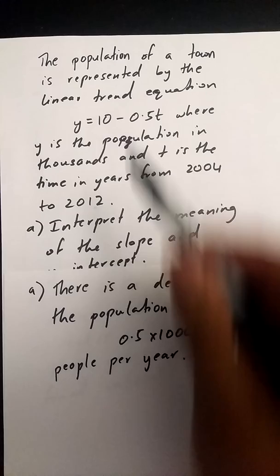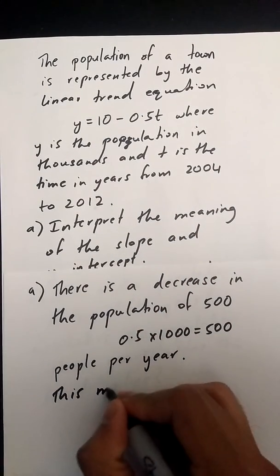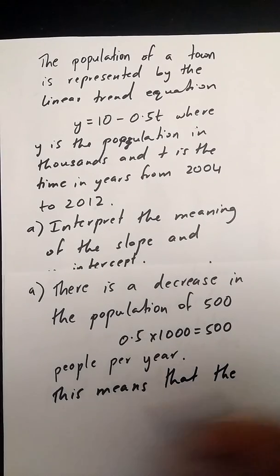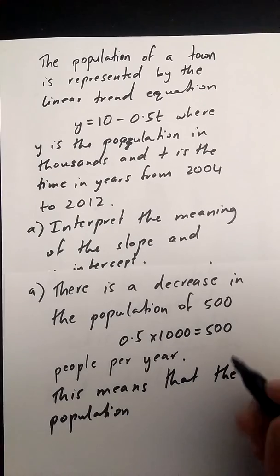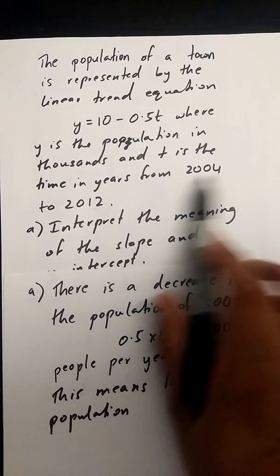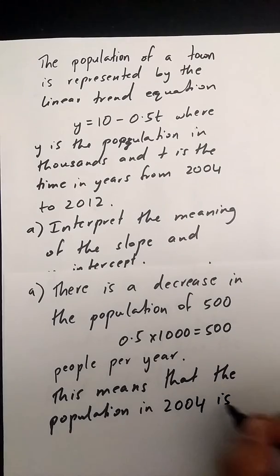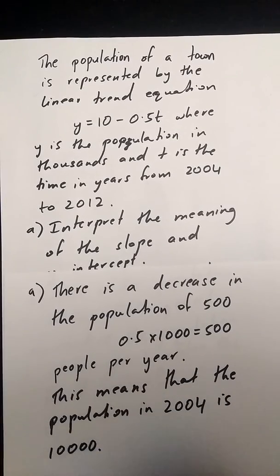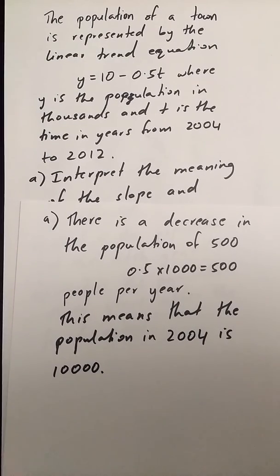Okay, the y-intercept is 10. This means that the population when t equals 0, basically in 2004, is 10,000. So that's the meaning of the slope and the y-intercept.